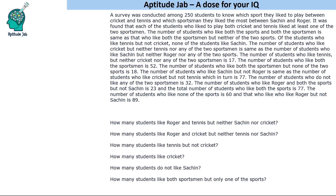Welcome to Aptitude Jab. This is a Venn diagram based question. There's a survey of 250 students tested on two sports — cricket and tennis — and two sportsmen — Sachin and Roger. Although there are two sports and two sportsmen, the statements involve combinations, so we will have a four-set Venn diagram.